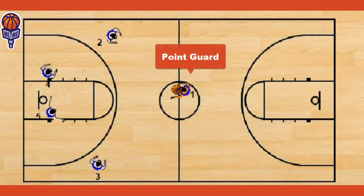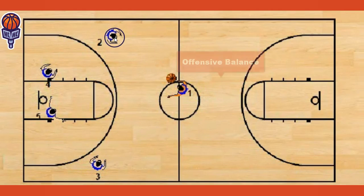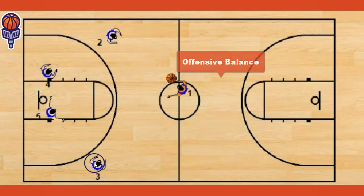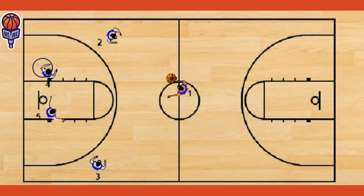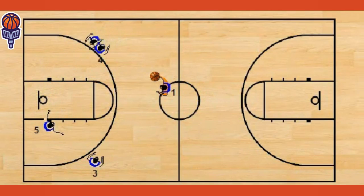The point guard comes down the floor and his job is to make sure we have proper balance — make sure everybody is in their correct position before he initiates the offense. He is the general on the floor. He has to control the offensive set and make sure he gets the job done.